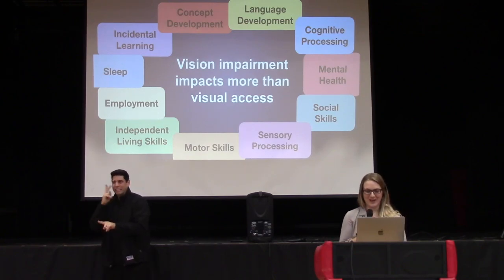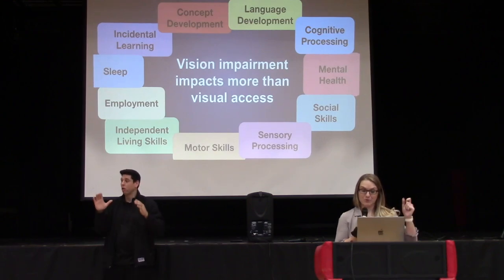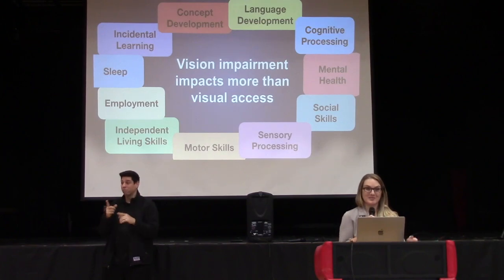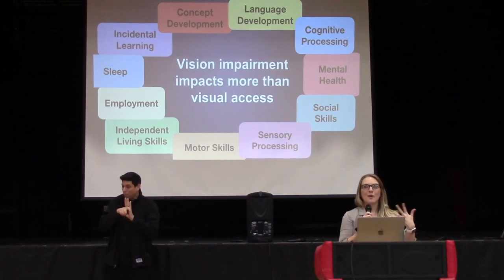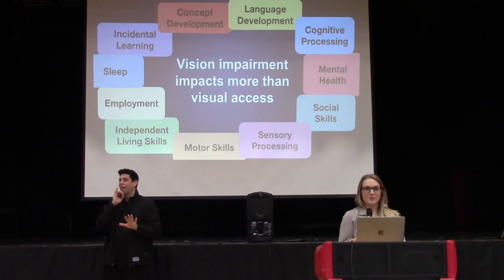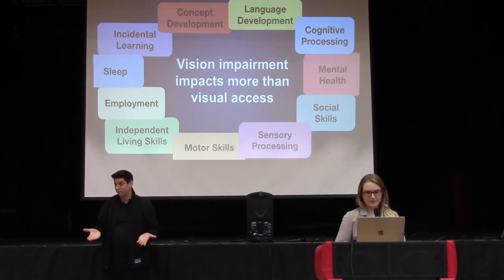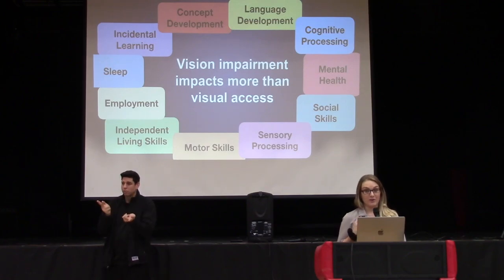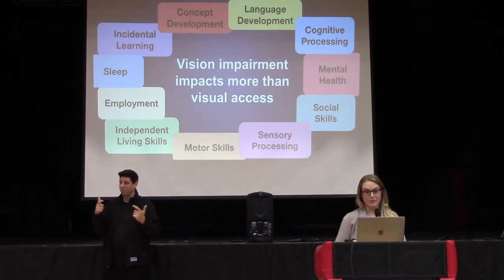Similarly, when comparing a worm and a spider, one student said both are small and both have legs — she had never touched a worm and had no idea worms don't have legs. Both examples hit home for me about how much incidental learning is done through vision. We don't tell kids worms don't have legs because we expect them to see it and know it. Research shows anywhere from 70% to 90% of early childhood learning is typically done through vision, so even with typical cognition, our students are at risk for very big learning gaps.